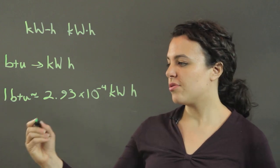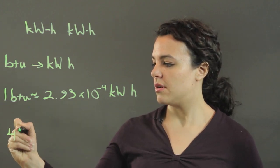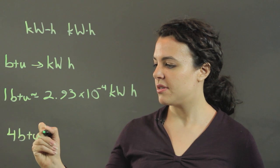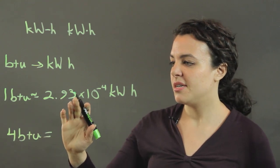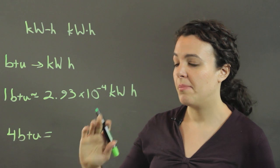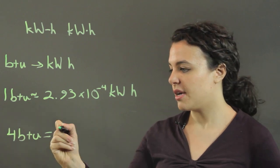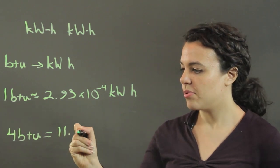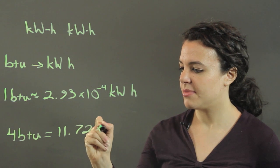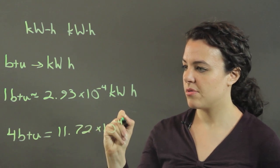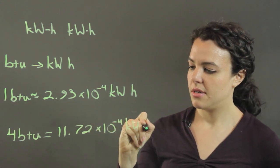So if I had four BTUs, I multiply 2.93 times 10 to the minus 4 by 4, and I will get 11.72 times 10 to the minus 4 kilowatt hours.